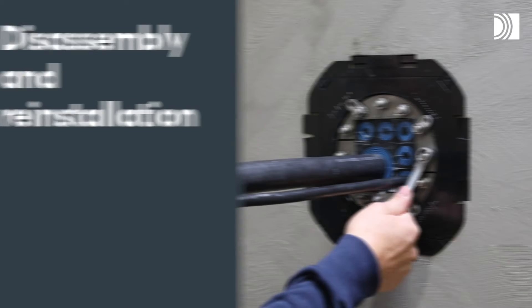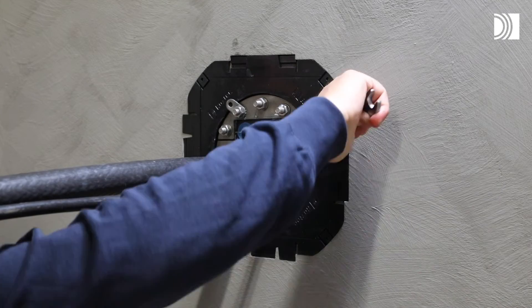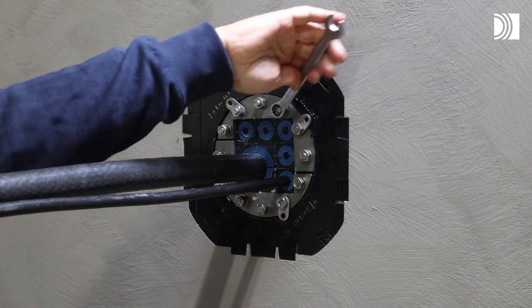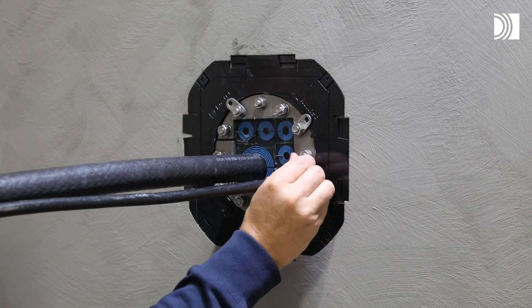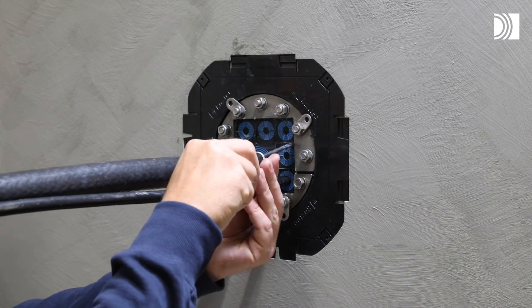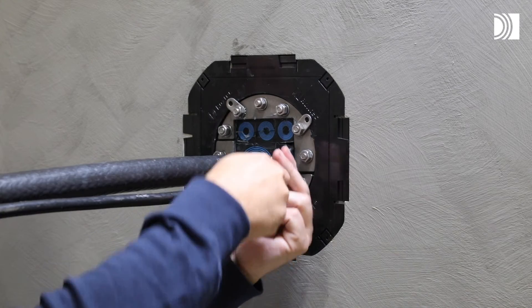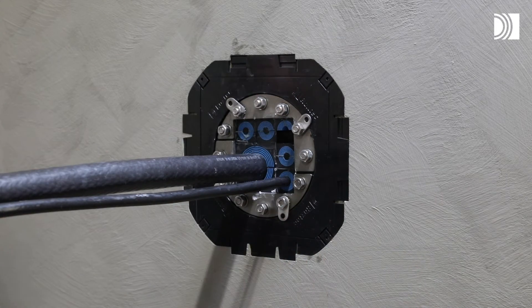Disassembly and reinstallation. Untighten the nuts crosswise. Make sure the nuts are completely loose. Remove the modules needed using a flat tool.